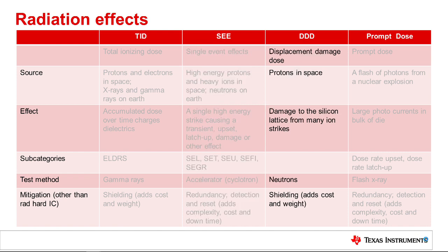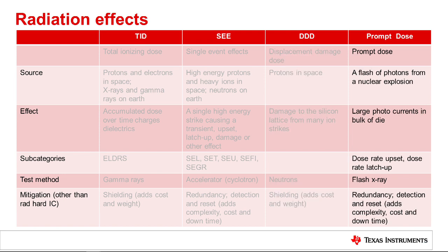Displacement damage is caused by protons crashing into an integrated circuit and damaging the silicon lattice. On Earth, we test this with neutrons. Prompt dose is caused by a flash of photons from a nuclear explosion, resulting in large photocurrents developing inside the die. Prompt dose is sometimes known as dose-rate upset or dose-rate latch-up, and testing is done with a flash x-ray.